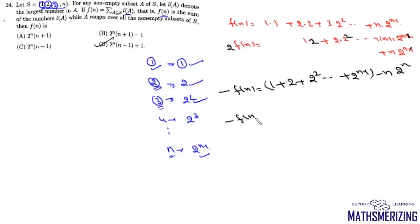So we have -F(N). Now this is nothing but a GP. Using the formula a(R^N - 1)/(R - 1), we get 2^N - 1 - N×2^N.